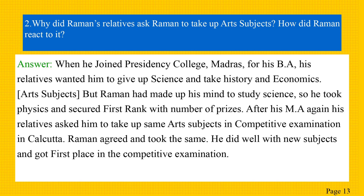The next question: why did Raman's relatives ask Raman to take up art subjects? How did Raman react to it? The answer is: when he joined Presidency College Madras for his BA, his relatives wanted him to give up science and take history and economics, that is art subjects. But Raman had made up his mind to study science, so he took physics and secured first rank with a number of prizes. After his MA, again his relatives asked him to take up the same arts subjects in the competitive examination in Calcutta. Raman agreed, did well with the new subjects, and got first place in the competitive examination.